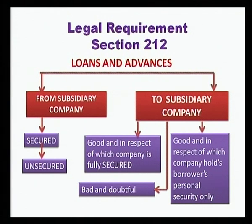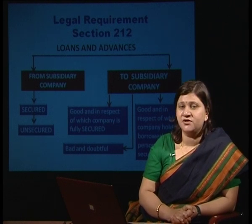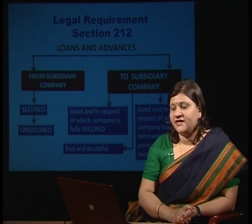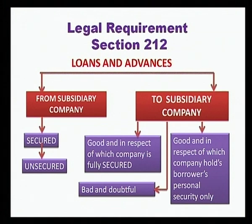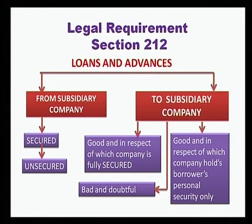We have presented a chart for this. If the loans and advances are taken from a subsidiary company, the holding company needs to disclose the secured and unsecured portions. Similarly, if loans and advances are provided to subsidiary companies, we need to disclose in the financial statements: first, good and fully secured loans; second, good but in respect of which the company holds borrower's personal security only; and third, bad and doubtful. We need to disclose this categorization of loans and advances in relation to transactions with the subsidiary company.